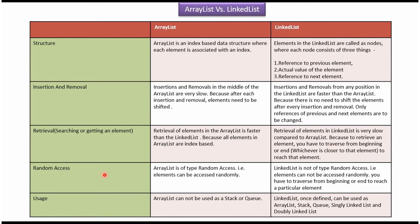Random Access: ArrayList is a type of random access, so we can access elements randomly. LinkedList is not a type of random access, so we cannot access elements randomly. You have to traverse from the beginning or end to reach the particular element.